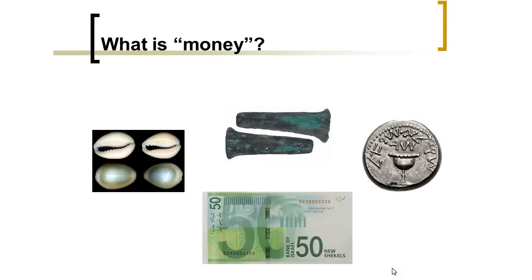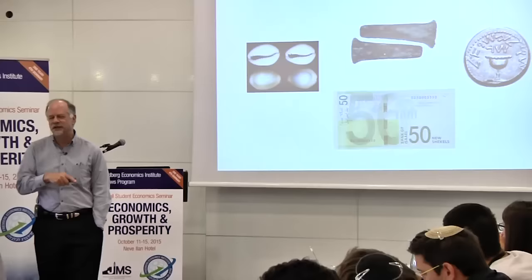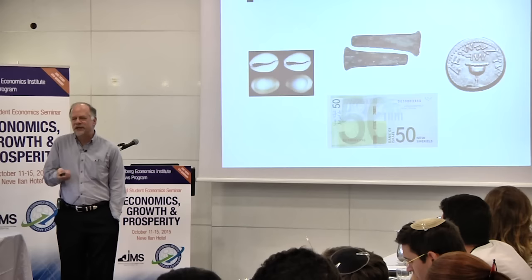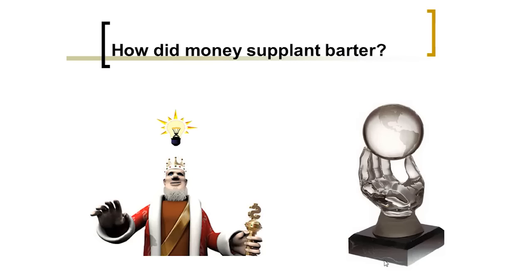Let me start at the beginning with the basic: what do we mean when we talk about money? If you look at pictures of objects that have served as money — shells, these little flat iron things, coins, paper notes — it's obvious that you can't define money by its physical characteristics. Almost nothing in common among these things. But what makes something into a money is the way it's used. We need a functional definition of money.